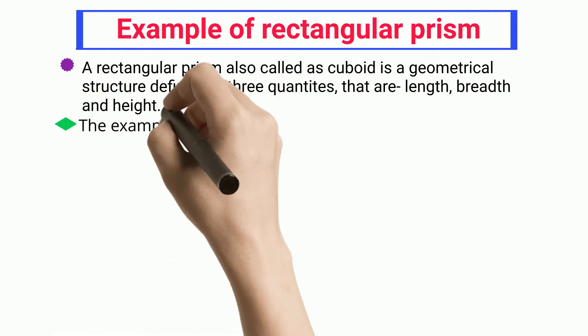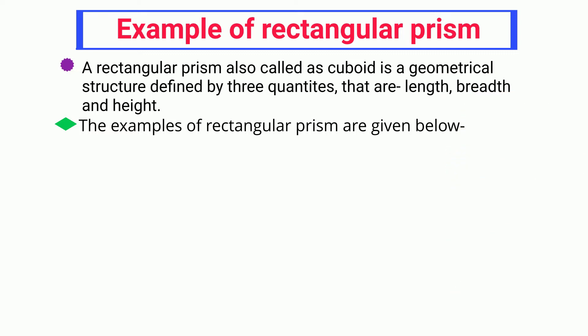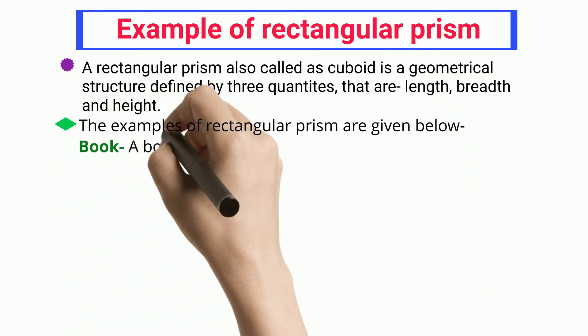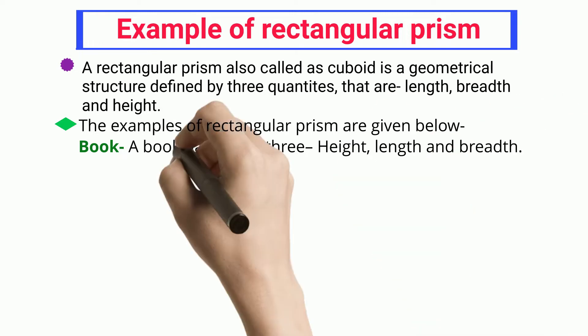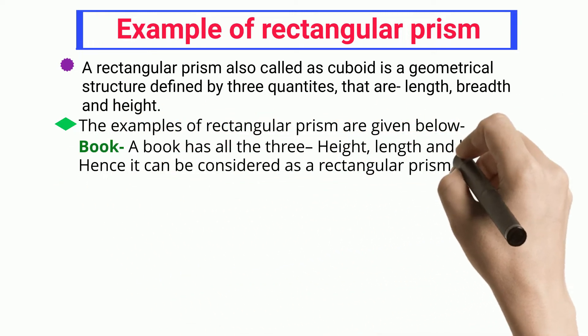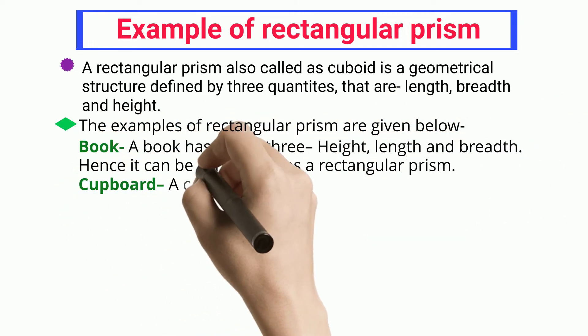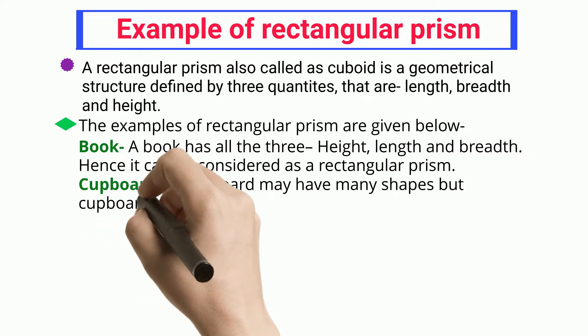The examples of rectangular prism are given below. Book: a book has all three — height, length, and breadth. Hence it can be considered as a rectangular prism.